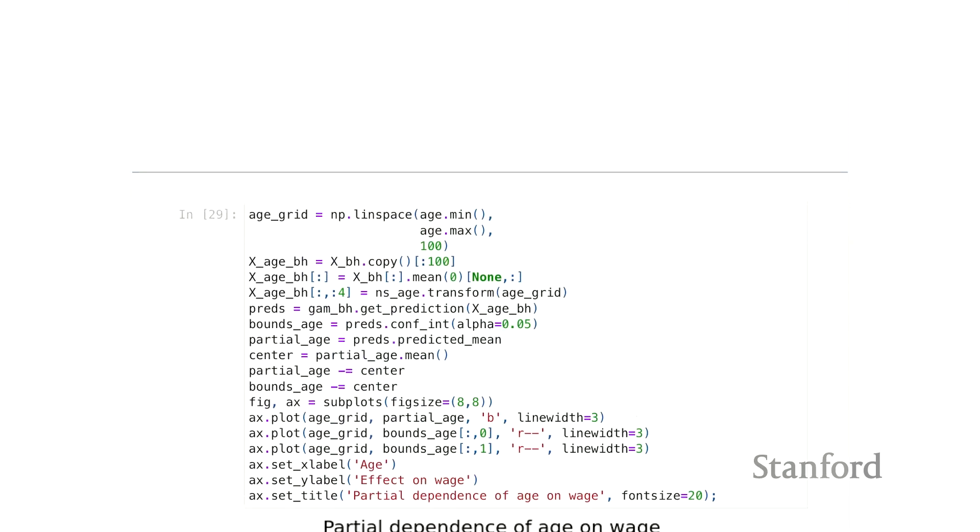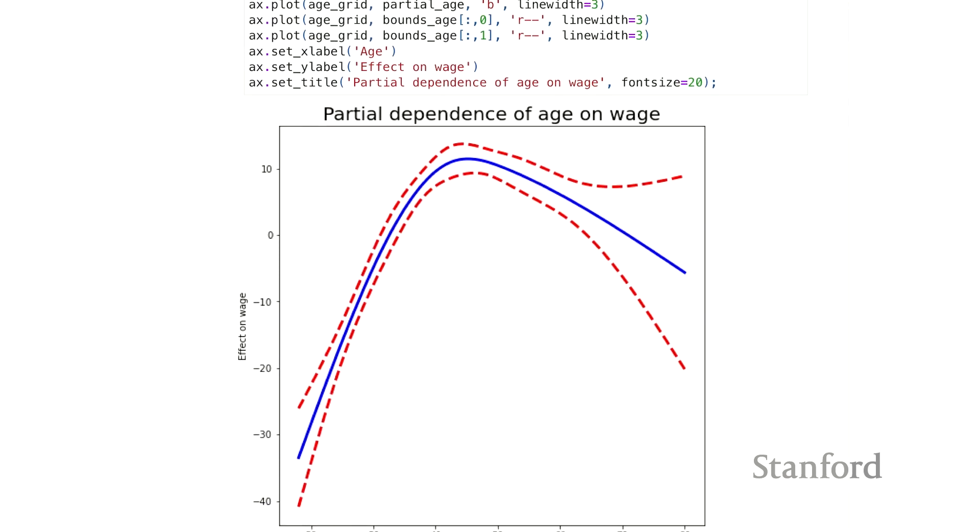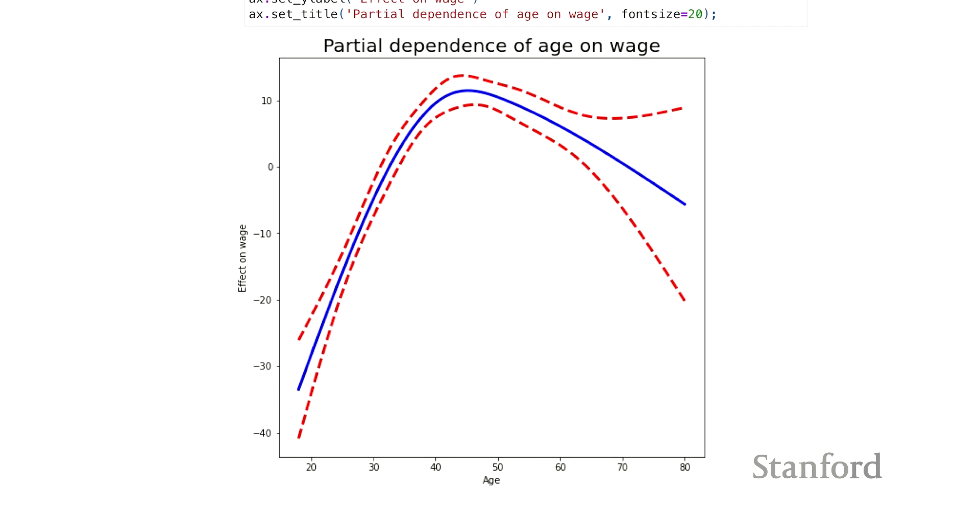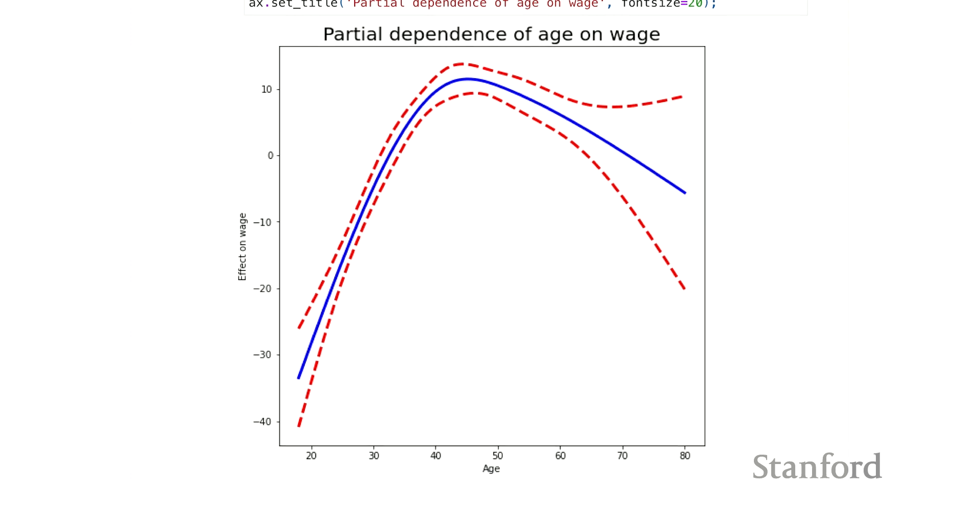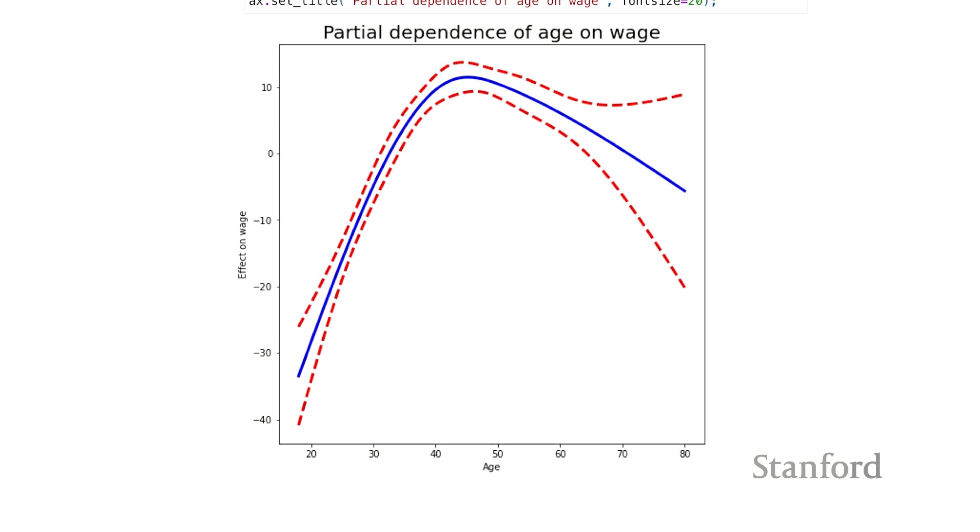So often in an additive model, you'll want to look at the individual effects of each feature, and that's typically done through a partial dependence plot. I'm not going to go through all the steps of the code to produce these partial dependence plots, but what I want to show here is that for each of the features in the model, you get a non-linear function.